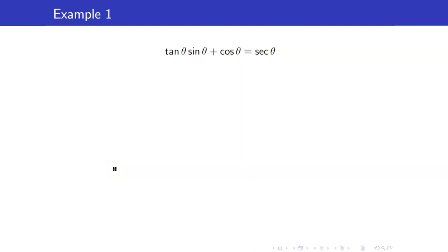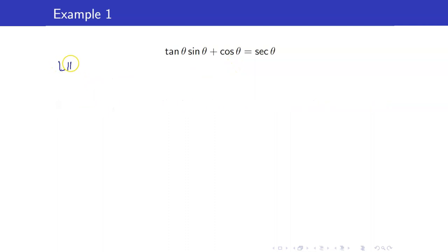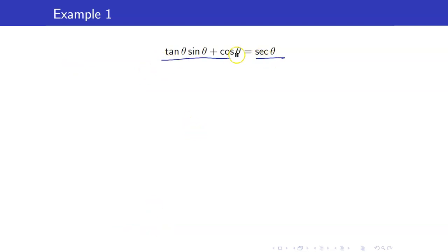Here is an example. We want to prove that tangent theta times sine of theta plus cosine theta is equal to secant of theta. What's important in proving identities is that you should not manipulate both sides of the equation at the same time. In proving identities, what you want to do is to establish, starting from the left-hand side, and then work your way until you reach the right-hand side. You cannot divide both sides, because whenever you are dividing both sides, you are already assuming that this is an equality. But what we want to prove is to really show that this is an equality.